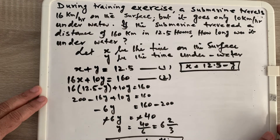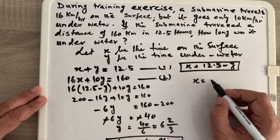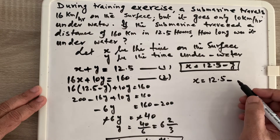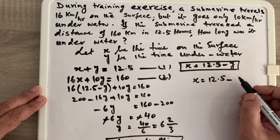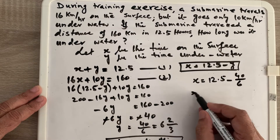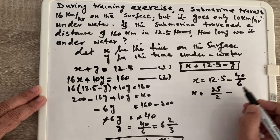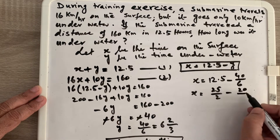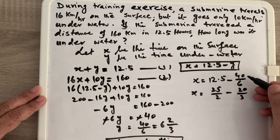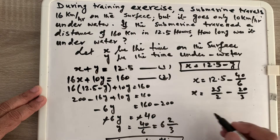Although the question only asks for time underwater, we can also find x — the time on the surface — by substituting back: x = 12.5 − 40/6. Writing 12.5 as 25/2 and simplifying 40/6 to 20/3, we find a common denominator of 6: 75/6 − 40/6.